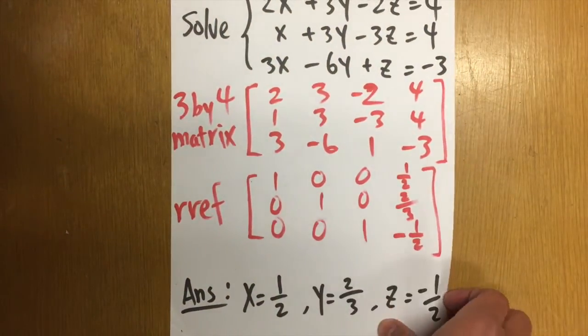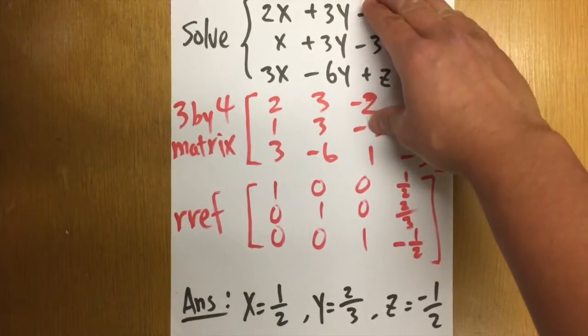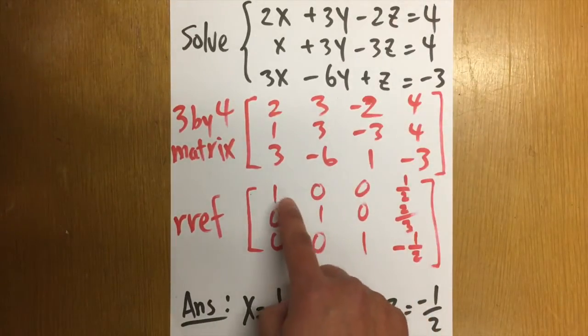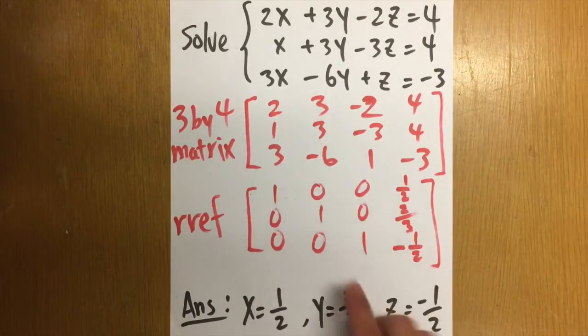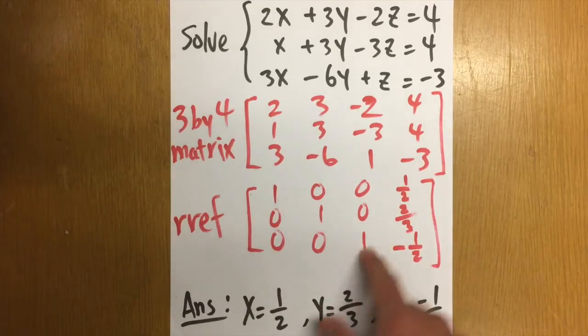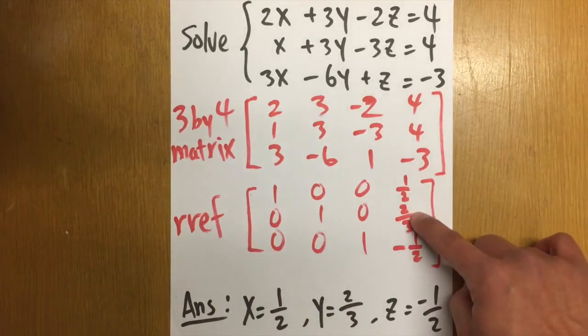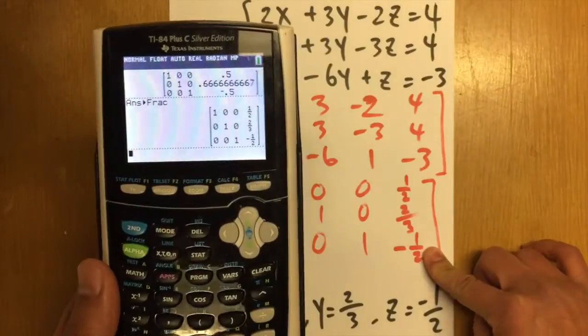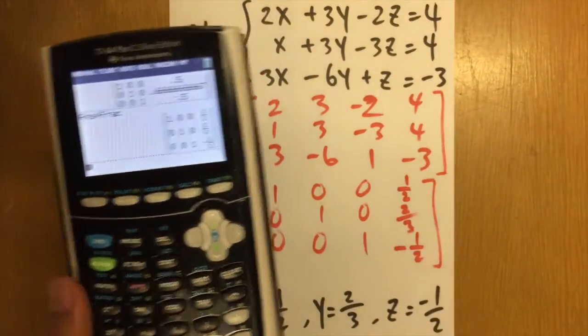So, RREF just means that we are going to have the matrix where the diagonals are 1, and this is the good situation. We have all these 1 right here, and then we have 1 half, 2 third, and negative 1 half.